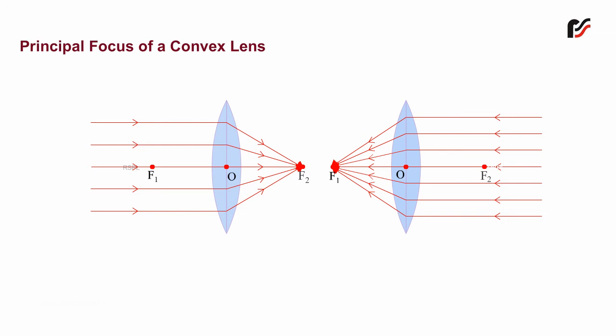The same effect can also be obtained from the other surface. So the convex lens has two foci, F1 and F2, one on each side of the lens.